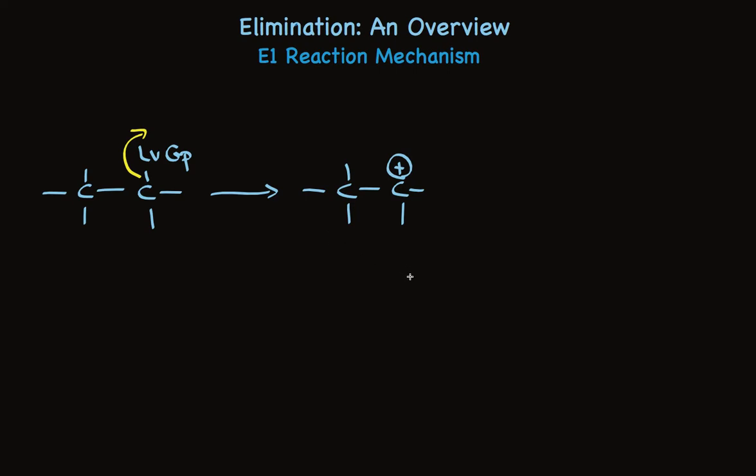Now, in nucleophilic substitution, we talked about a nucleophile adding to that carbocation. But look at this. If the adjacent carbon has a hydrogen attached to it, and we have a base present, that base can form a bond with that proton, removing it, so this pair of electrons can form a double bond with the carbon.